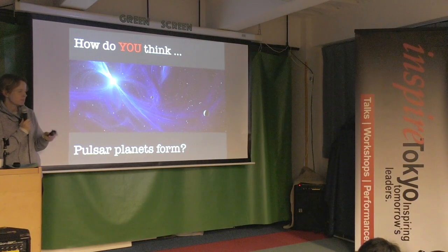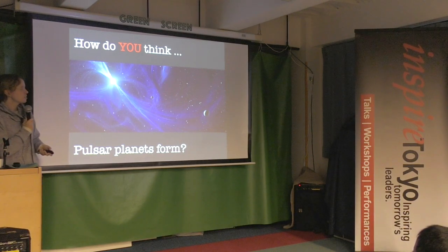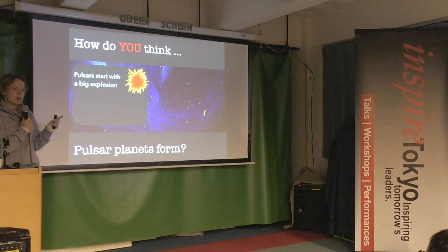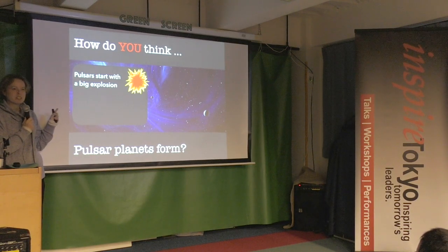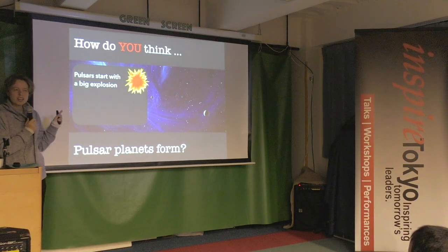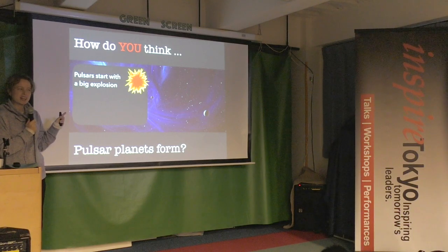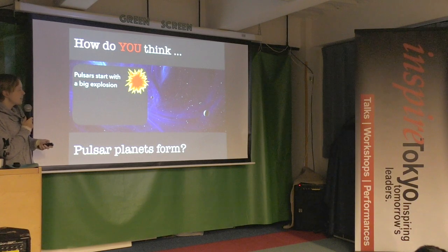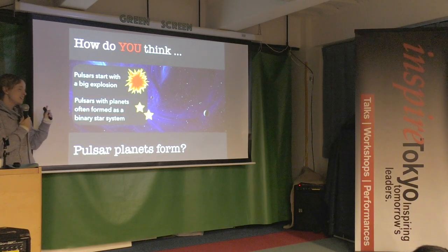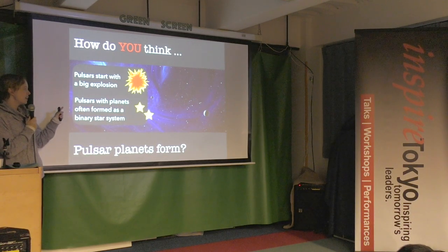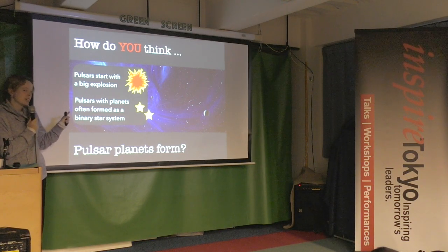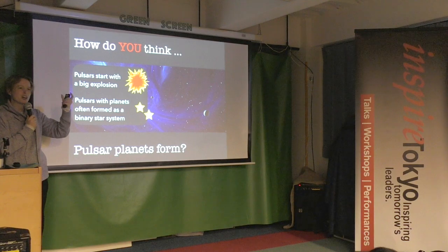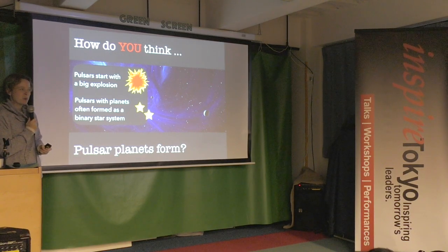Second question: how do you think pulsar planets form? Two hints: first, remember pulsars start with a big explosion — think about what that means for any planets orbiting at the time. Second, pulsars with planets are often born with a stellar twin — two stars orbiting one another.